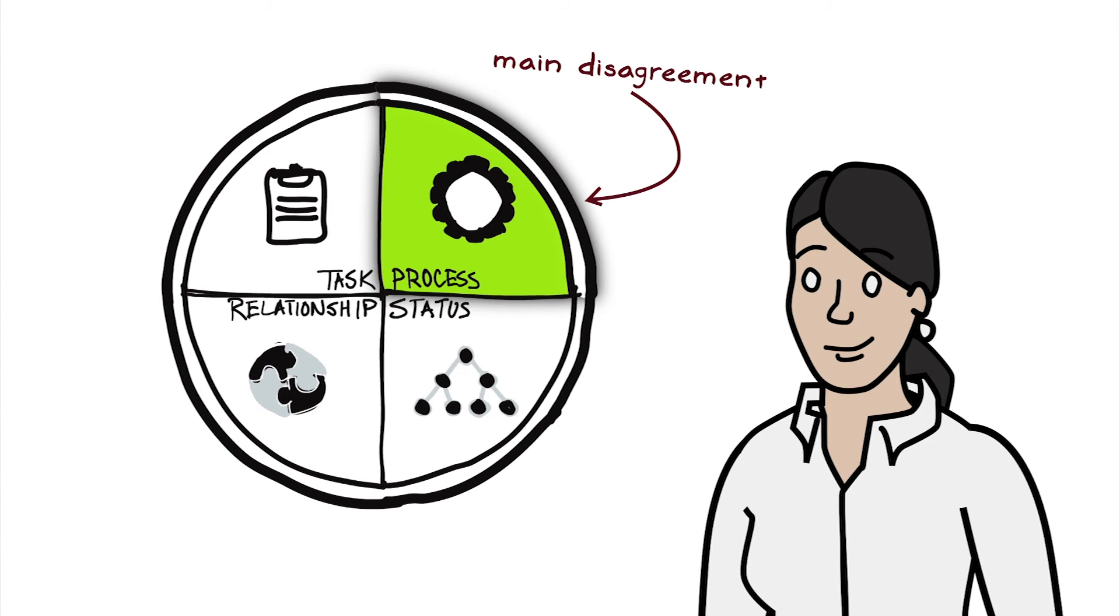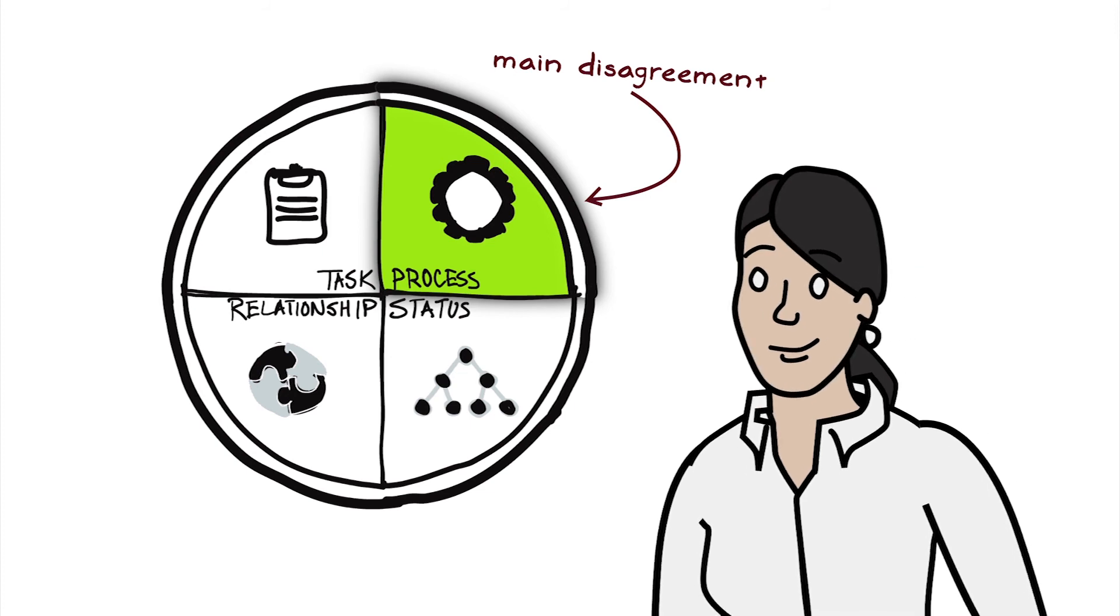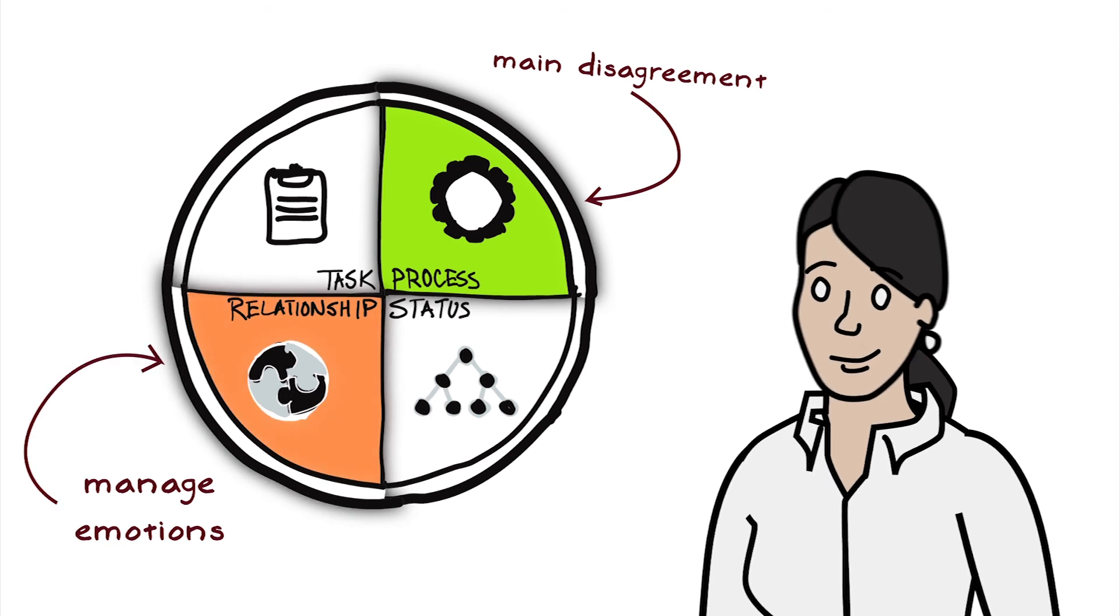However, before they can have a productive conversation, Kate needs to help them manage their emotions, which is a key skill in handling a relationship conflict.